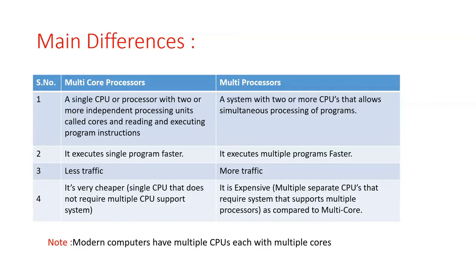So once we understand the working procedure of the multi-core processor and the multi-processor system, including what they are and their advantages, let us now see the differences between these two.